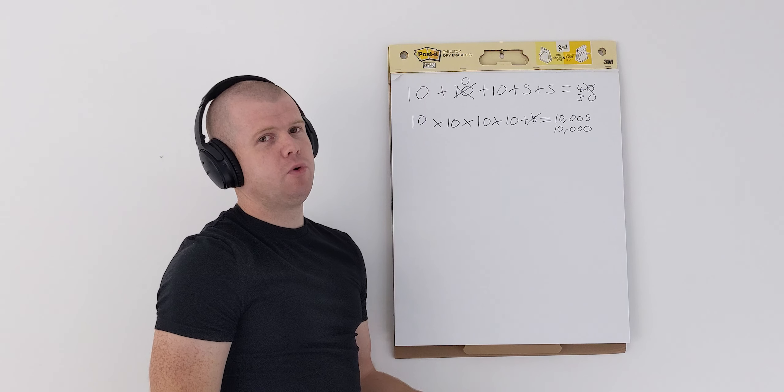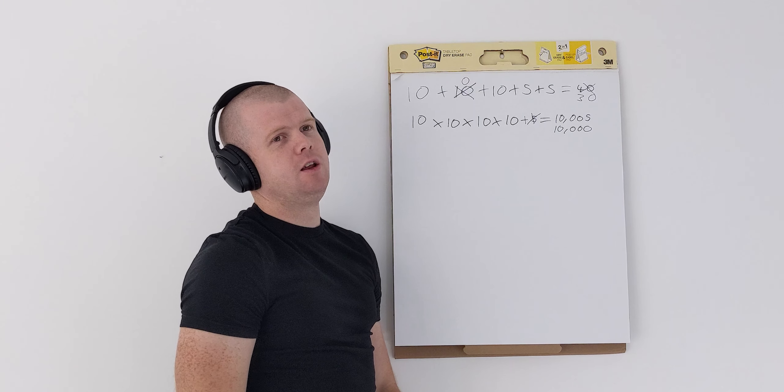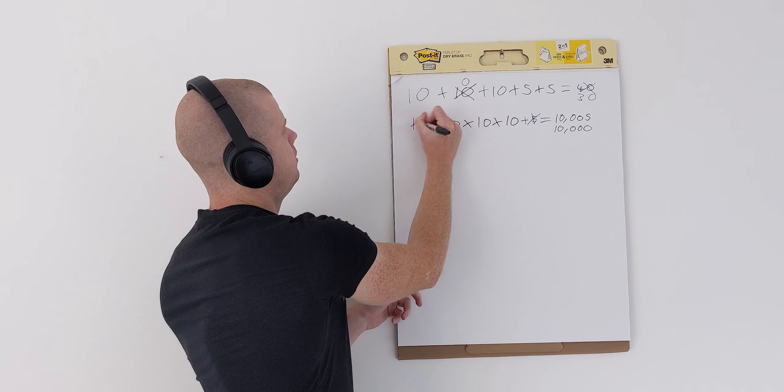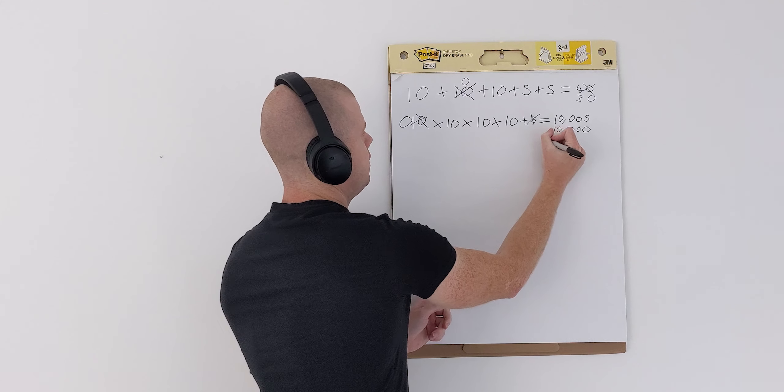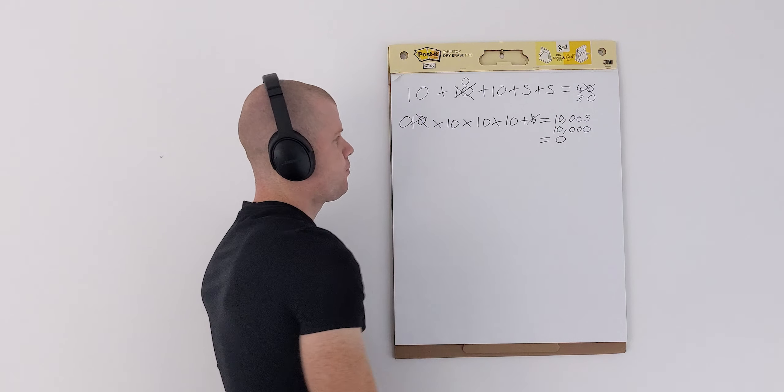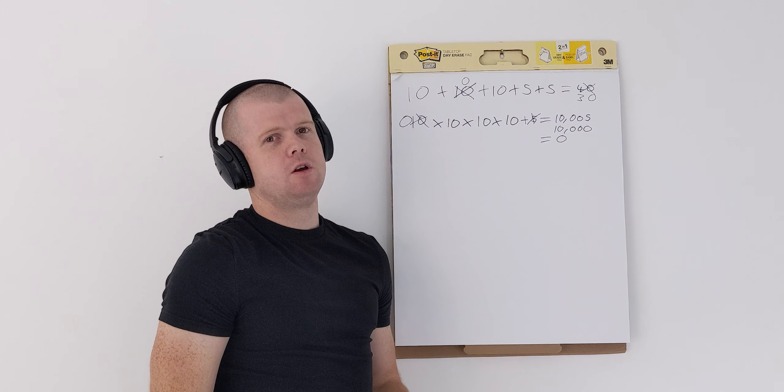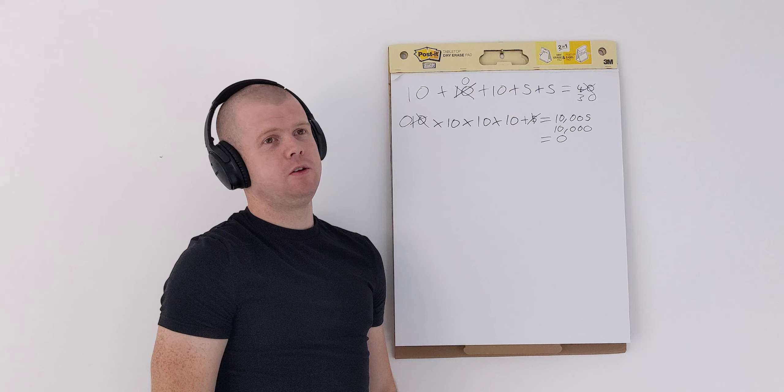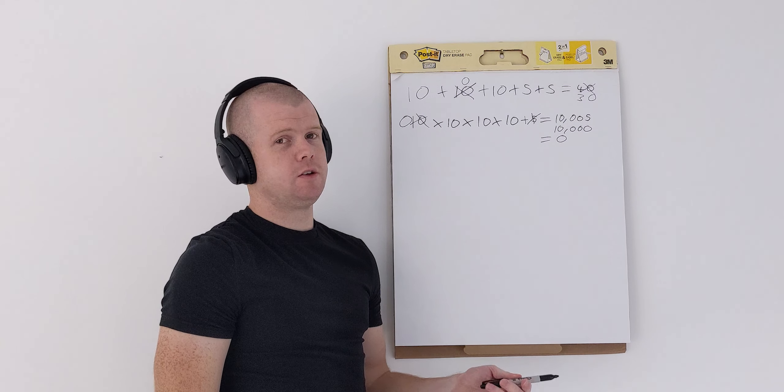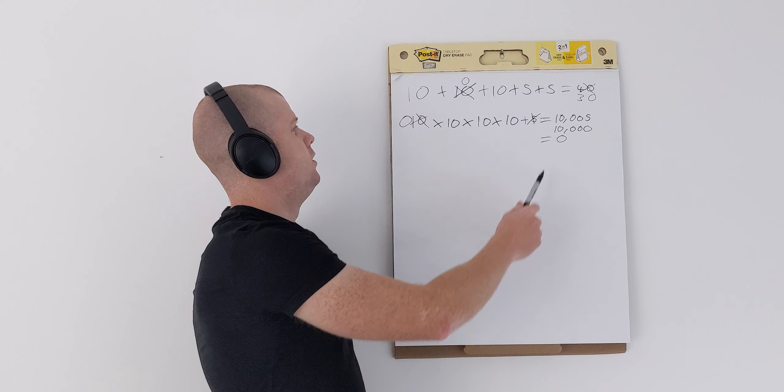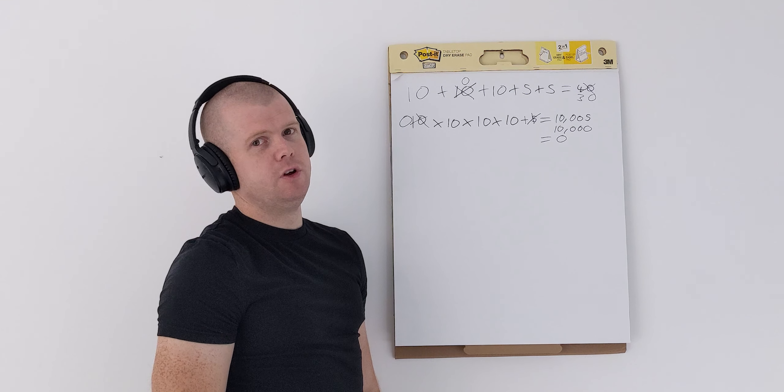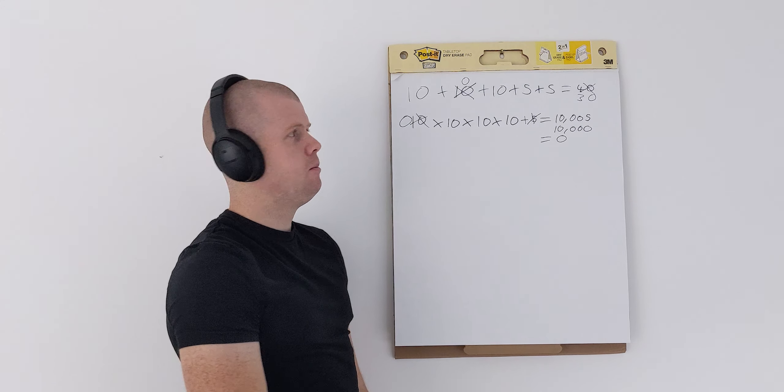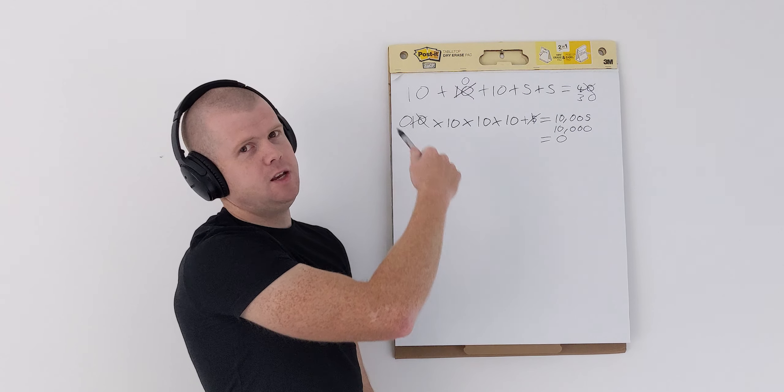However, what happens if we have an engine failure? So, this 10 becomes a 0. And that means that the overall output is 0. Of course, we can't carry on with the race in these conditions. And this highlights the reward you have for lots of multipliers in your system. You have 10 times 10 times 10,